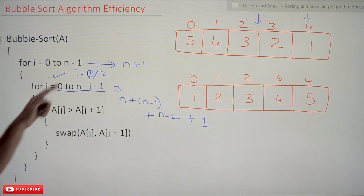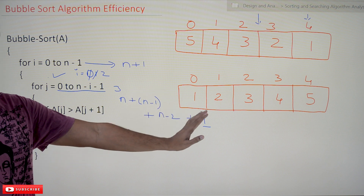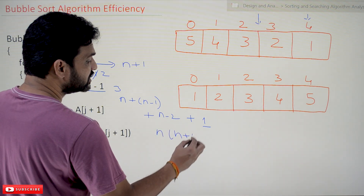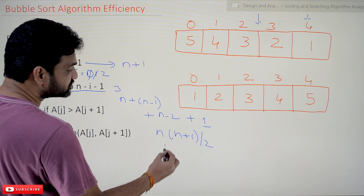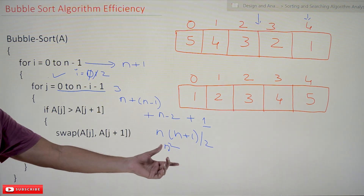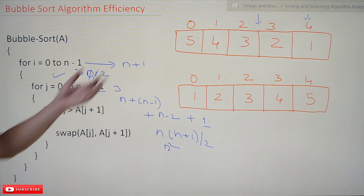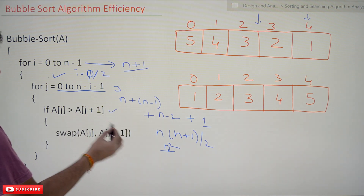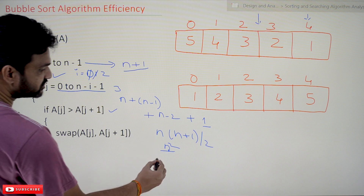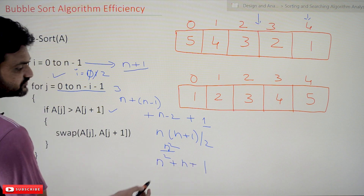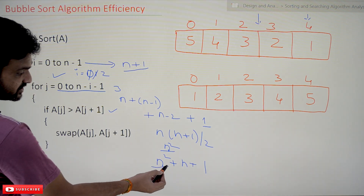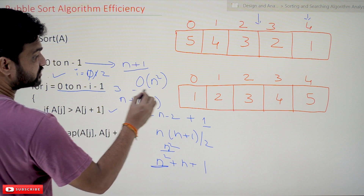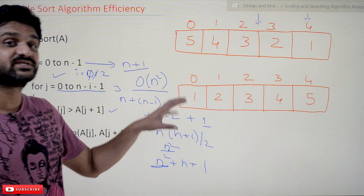If you analyze this, you can see it resembles the sum of n natural numbers: n times (n+1) divided by 2. Expanding this, the higher-order term is n squared. So even though we also have n plus 1 from the outer loop, giving us n squared plus n plus 1 total, we consider only the higher-order term. Therefore, the efficiency of this algorithm is O(n²).